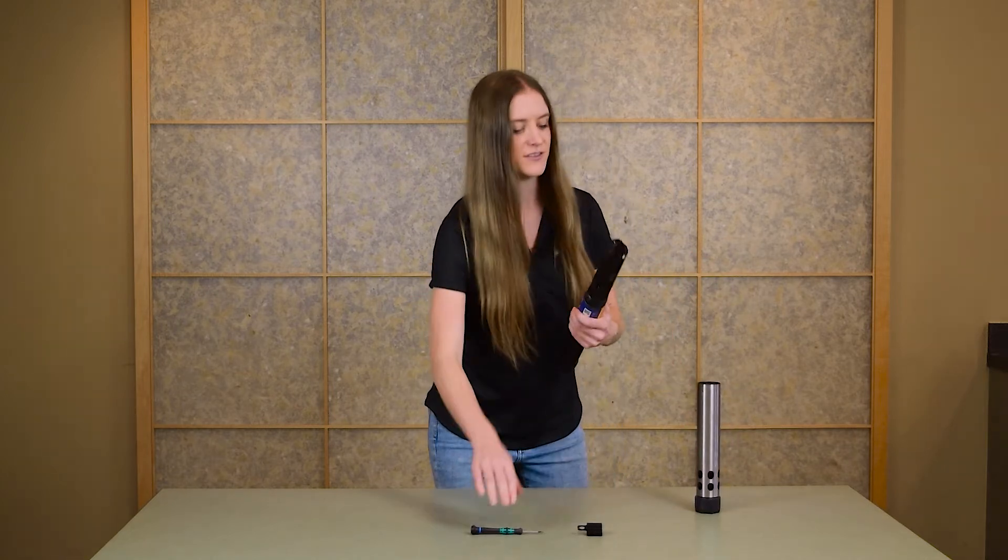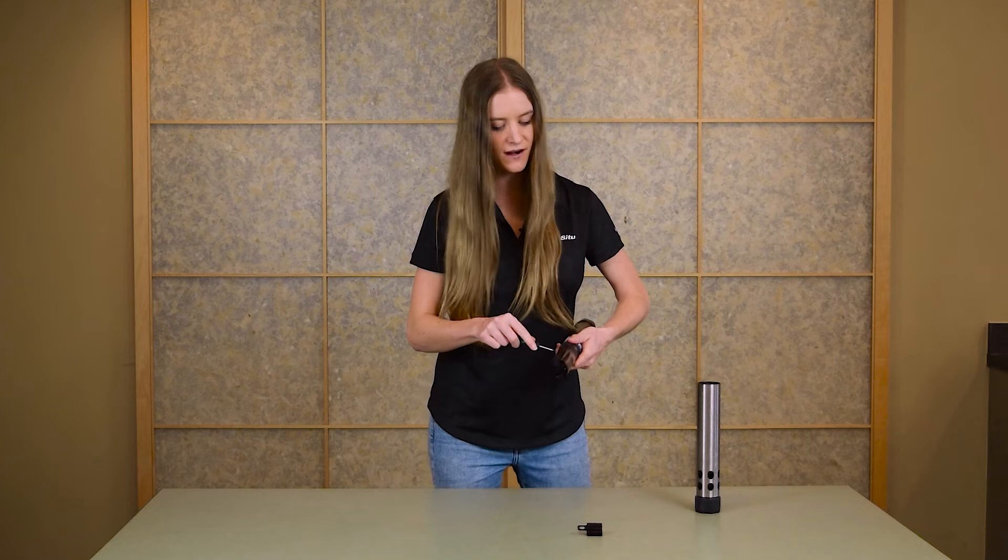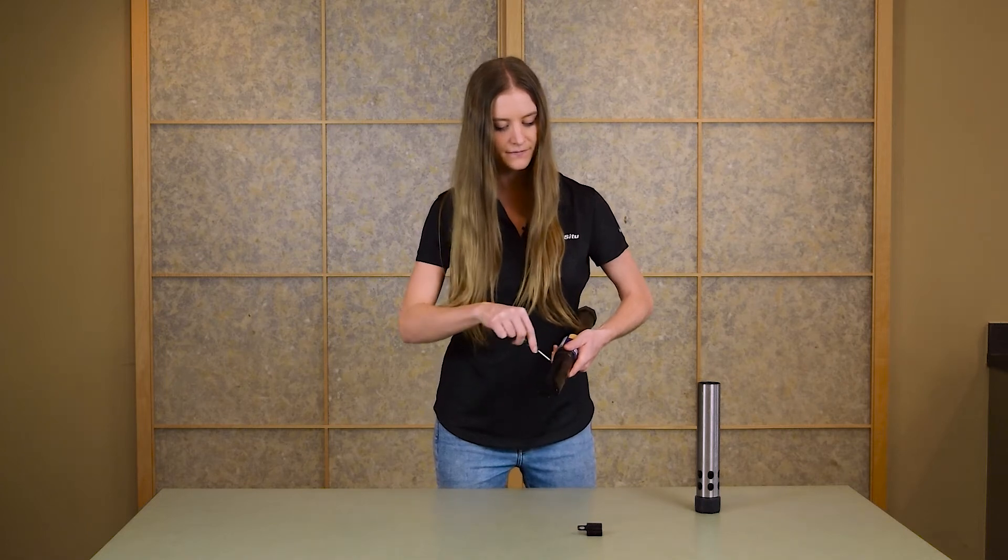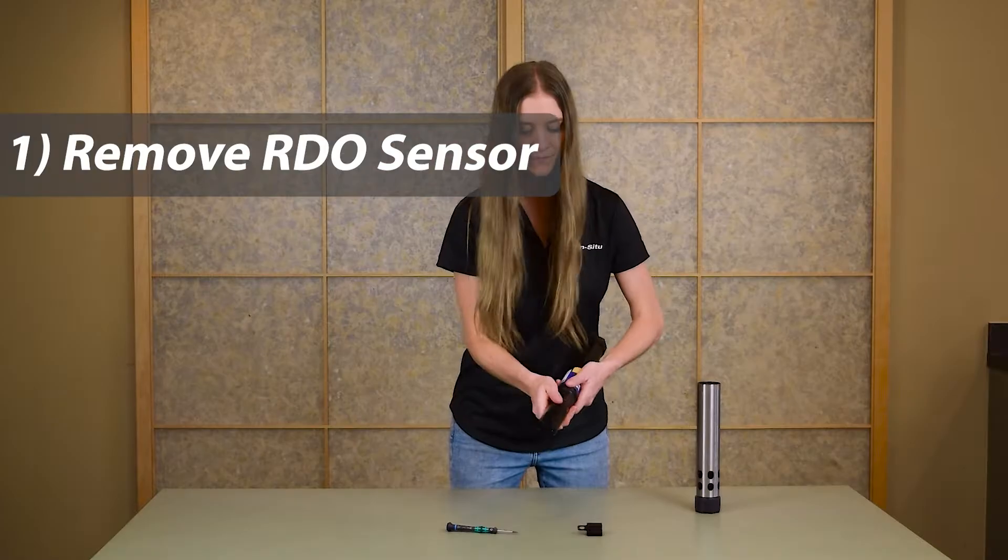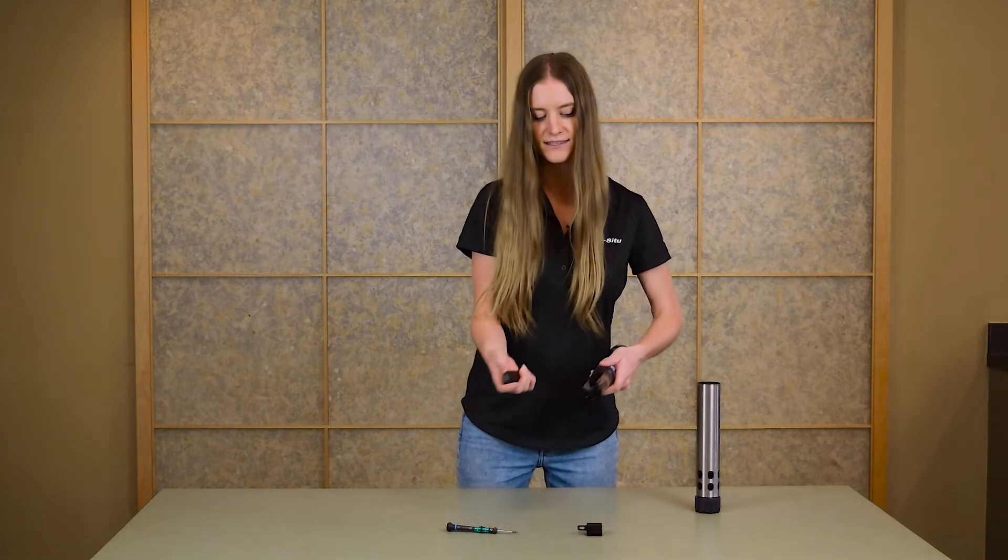You'll begin by removing the restrictor and then find and remove the RDO sensor. Loosen the sensor set screw at the base of the sensor and then slide the sensor out of the instrument.